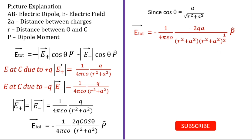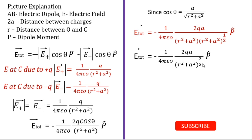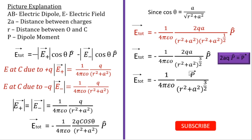We can write root of r squared plus a squared as r squared plus a squared to the power half. So r squared plus a squared to the power 1 and r squared plus a squared to the power half gives us r squared plus a squared to the power 3 over 2. If we consider 2aq times unit vector of P to be the dipole moment — since dipole moment is magnitude of charge times distance, which is 2aq into unit vector of P equals vector P — then E total becomes minus of 1 over 4 pi epsilon naught times P vector divided by r squared plus a squared to the power 3 over 2.